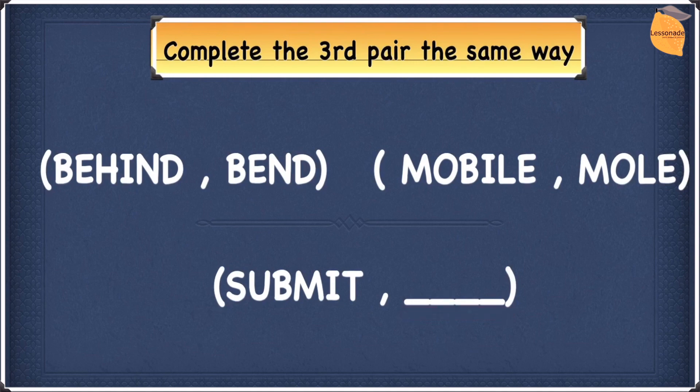So first, let's start by numbering BEHIND. Let's write 1, 2, 3, 4, 5, 6. And let's do the same for MOBILE. So 1, 2, 3, 4, 5, 6.